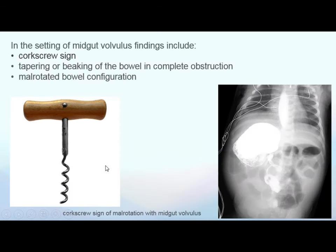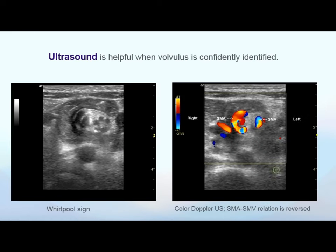When midgut volvulus happens, we see the corkscrew sign — it looks exactly like a corkscrew. Tapering and beaking occur, and with more rotation we see a more rotated bowel configuration. On ultrasound, because it is pediatric, we perform ultrasound to identify it confidently. The whirlpool sign is seen. Another very important point is that the relationship of the superior mesenteric artery and superior mesenteric vein will be reversed — normally the superior mesenteric vein is to the right of the superior mesenteric artery, but in midgut volvulus the relation is reversed due to rotation.